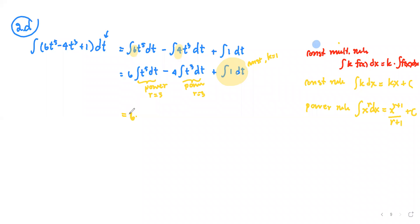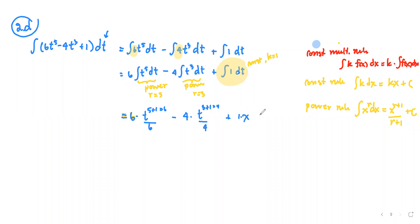Writing it out in a different color: the first term gives 6 times t to the 5 plus 1, which is t to the 6, divided by 6. We subtract 4 times t to the 3 plus 1, which is t to the 4, divided by 4. Then for the constant rule with k equals 1, we get plus t, and we add the constant of integration C.